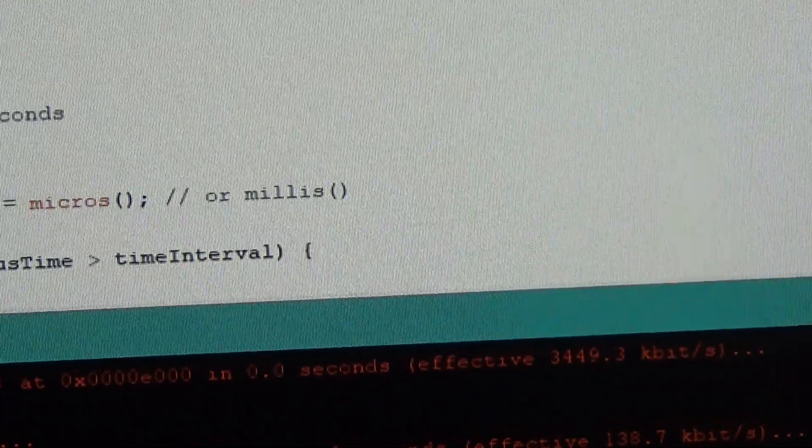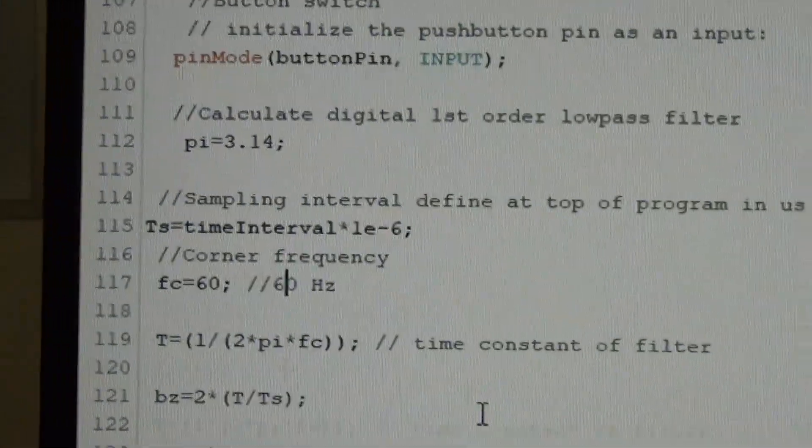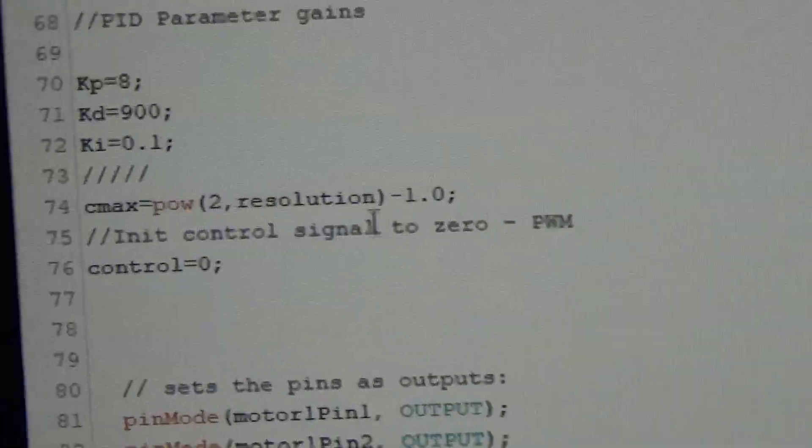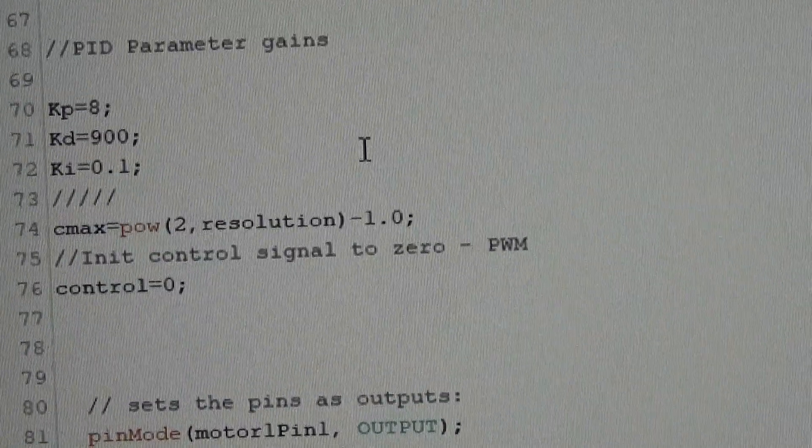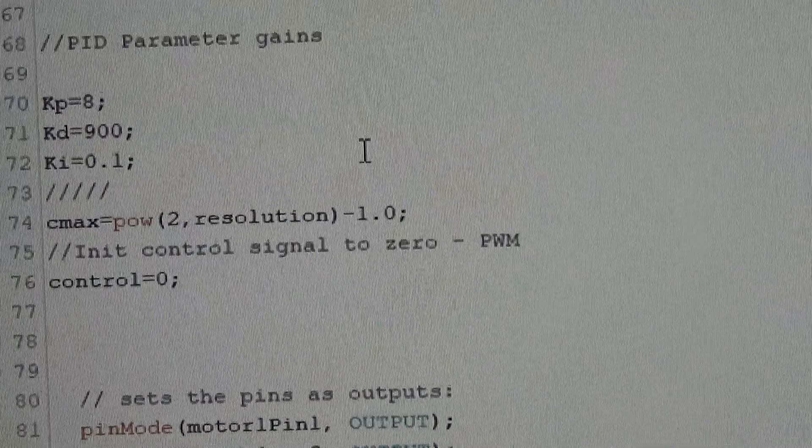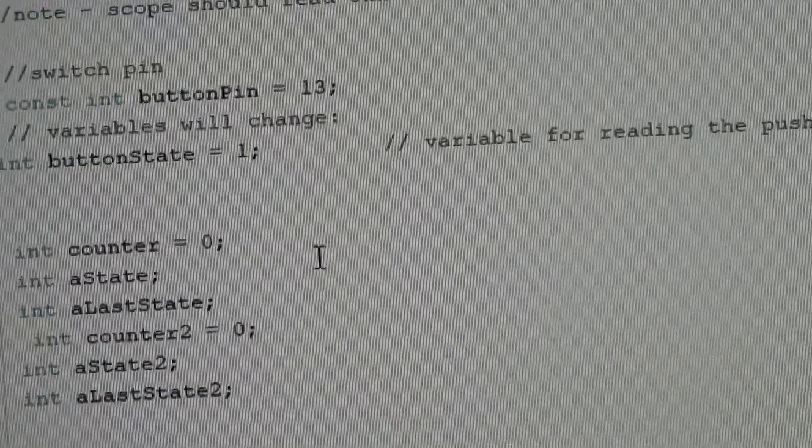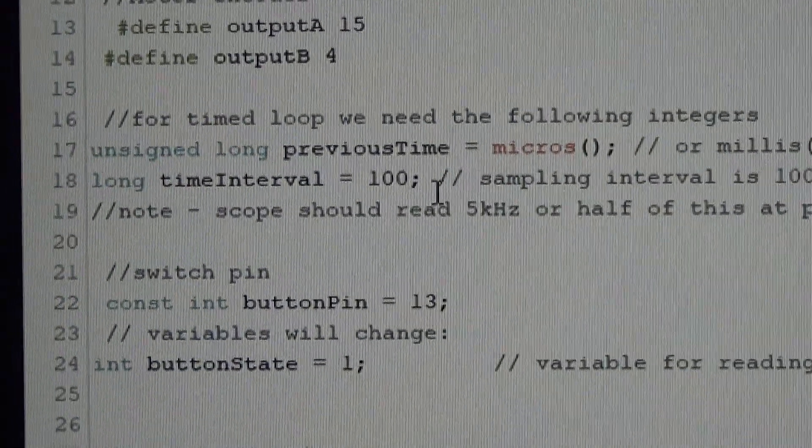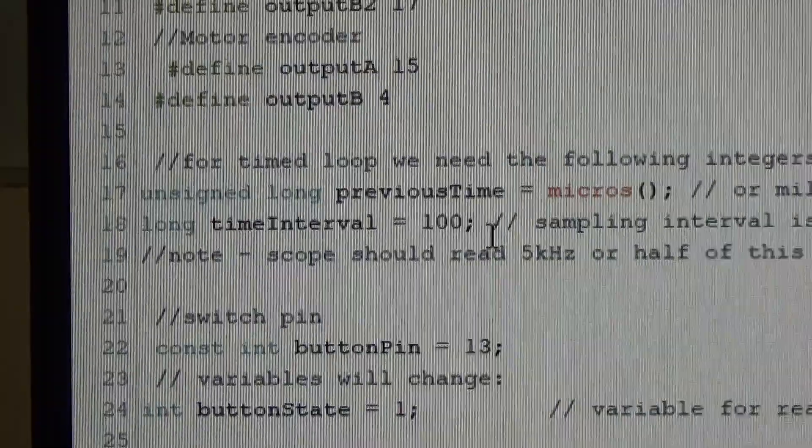I've altered the program a tiny bit from the previous video where we had the small motor. I've got a PID controller in the settings here and I've got a filter on the derivative action which I haven't shown you the theory yet how I do that. I've set the sampling frequency up to be 10 kilohertz. I think I did that in the last video as well, yes.